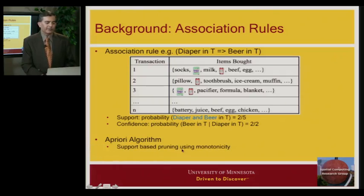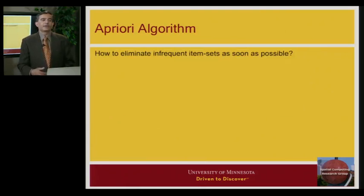So these particular interest measure, particularly support has this very interesting property called monotonicity. In other words, support for beer is greater than equal to support for beer and diaper. And this goes on for the other set subset relationships. So support for a set is always less than equal to support for one of its subset. And because of that, you can do pruning. So let me illustrate that via this common algorithm called apriori.